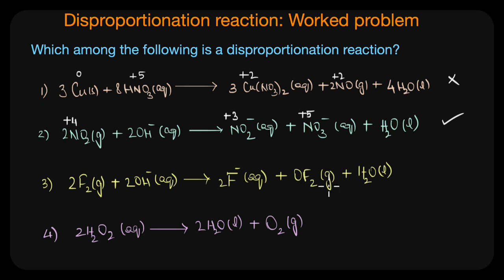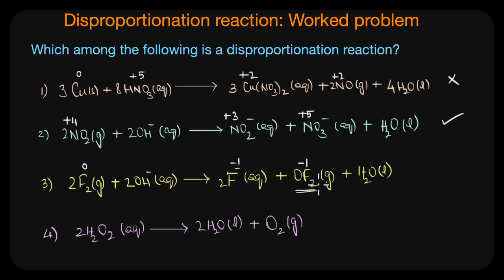For the next reaction, you might be tempted to call it a disproportionation reaction because fluorine appears in F2, F⁻, and OF2. But we must check the oxidation states carefully. Fluorine in F2 is zero, and it changes to minus one in both 2F⁻ and OF2 — because fluorine is the most electronegative element and cannot exhibit any positive oxidation state. So fluorine can only undergo reduction, not disproportionation. In fact, fluorine is the only halogen that cannot undergo a disproportionation reaction; all other halogens can in alkaline medium.